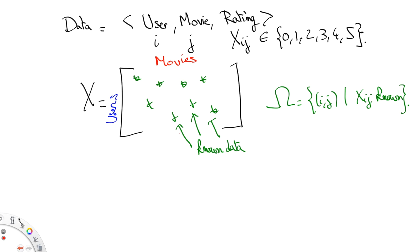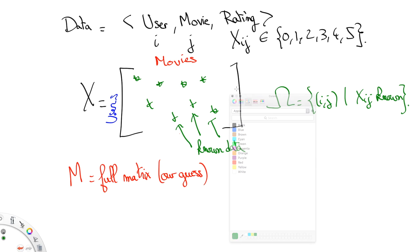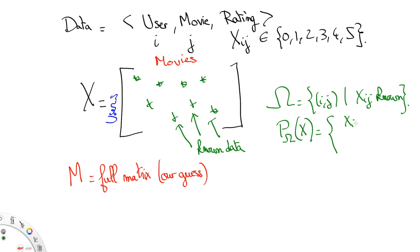More formally, we are thus searching for a matrix M which coincides with the X_IJs that we know of. So let's define omega to be the set of pairs I, J whose rating we know and let's call P_omega(M) and P_omega(X) the matrices obtained by cancelling all entries M_I'J' and X_I'J' for which I'J' does not belong to omega.